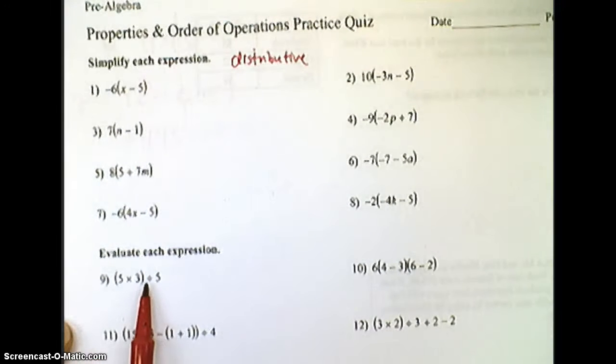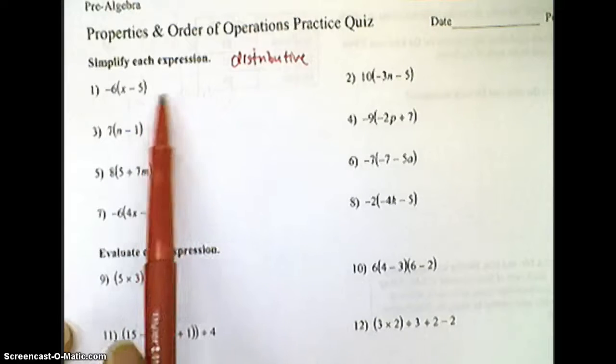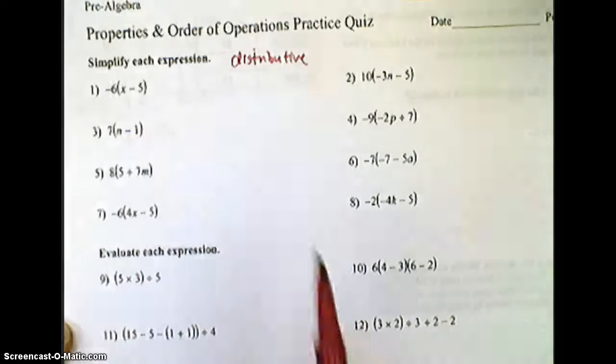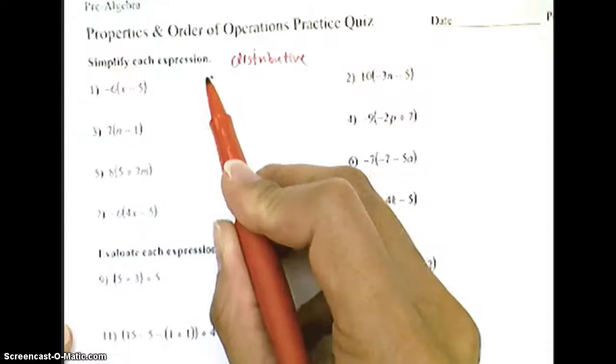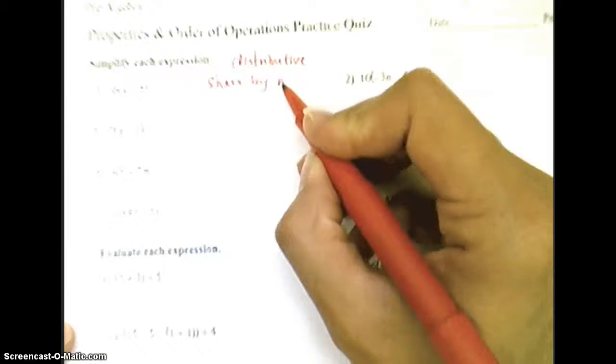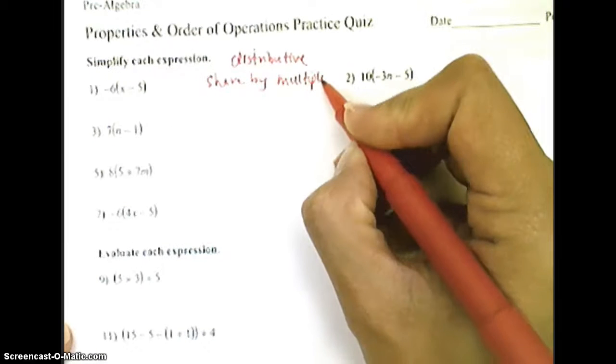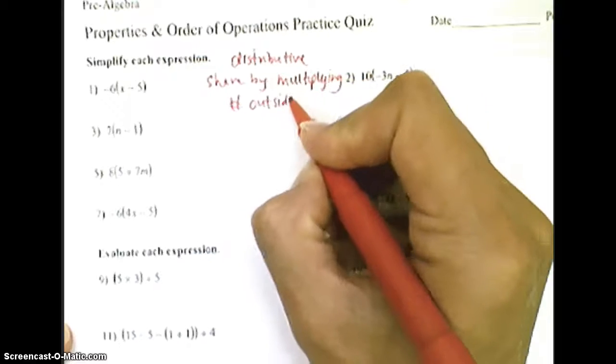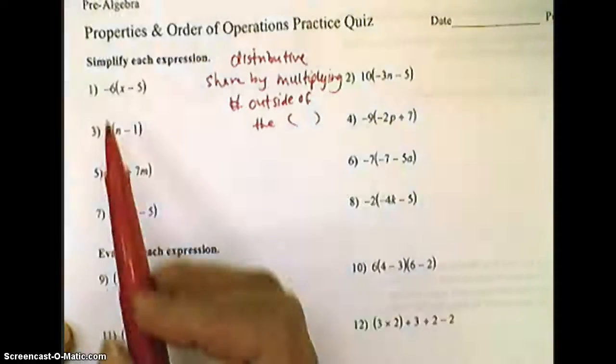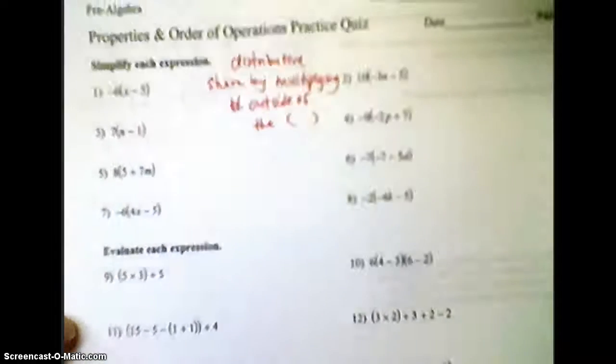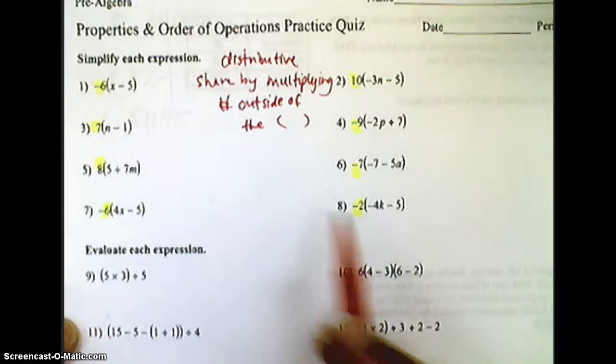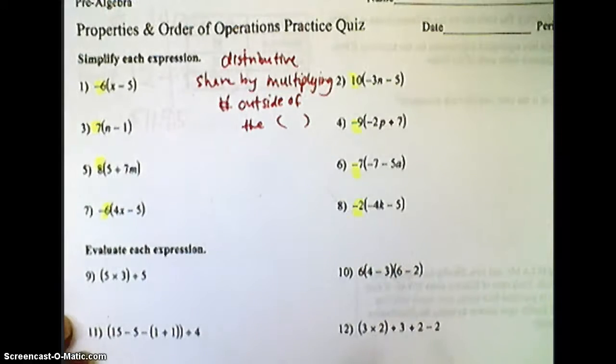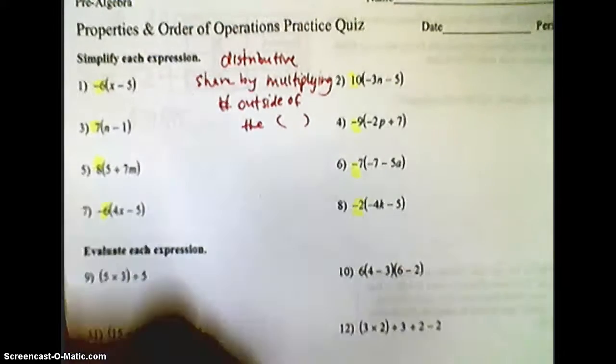You can tell that numbers 1 through 8 are all distributive property because we see a number outside of the parentheses that's being multiplied, as well as variables or numbers inside of a parentheses that is showing adding or subtracting. That's a little different than number 9, for example.